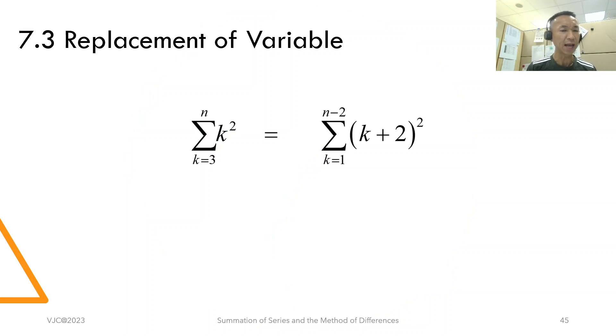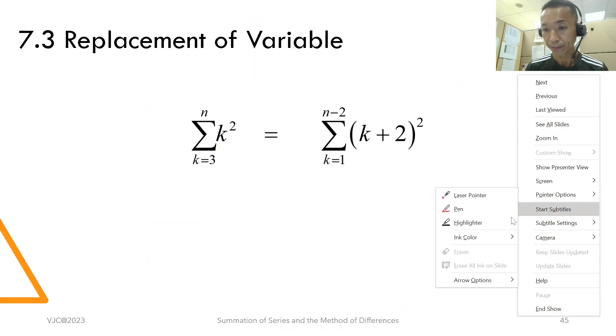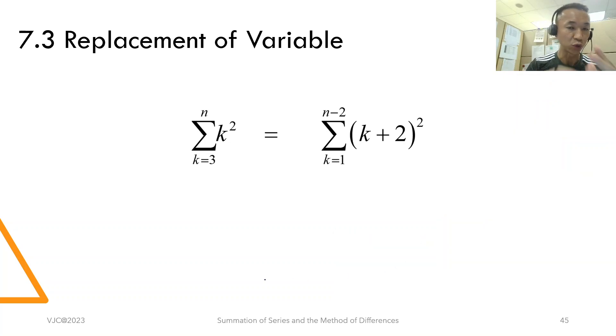Let me use a very simple example to illustrate. Let's take a look at this one, or the one on the left, the expression on the left. You should know by now this notation, that means you sub k equals 3. If I write out the terms, it's 3 square plus 4 square all the way to n square.